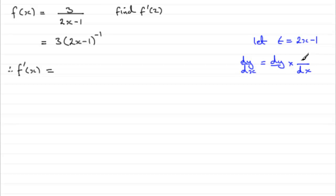And these d somethings must be the same. It's as if they cancel. And I'm going to choose, in this example, dt, with t being the 2x minus 1.